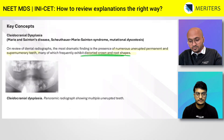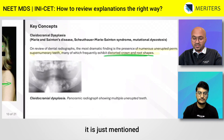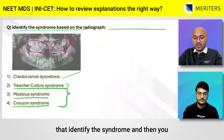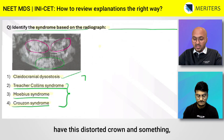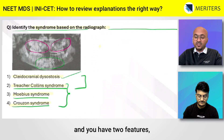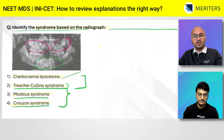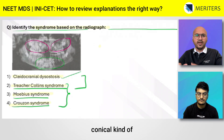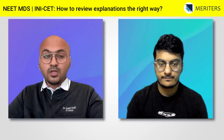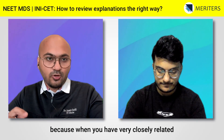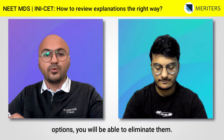Also note that distorted crown and root shapes are mentioned in the key concept — details you might have missed. But if a question mentions distorted crown and root shape alongside supernumerary teeth, and you have two conditions with supernumerary teeth where one has only conical supernumerary teeth, you can use those smaller details to eliminate the wrong option. Look at these finer details when closely related options are present.